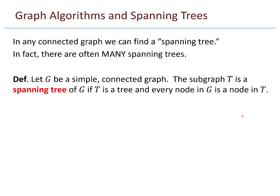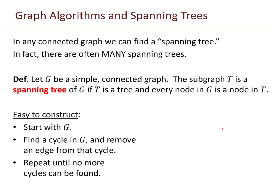Let G be a simple connected graph. The subgraph T is a spanning tree of G if T is a tree and every node in G is a node in T. They're pretty easy to construct. All you need to do is start with some graph G, find a cycle in G, and remove an edge from the cycle.